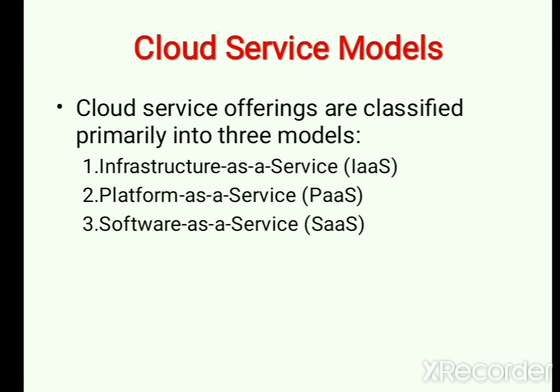The first service model is Infrastructure, the second is Platform, and the third is Software. For Infrastructure, I am requesting a particular resource, I hire that resource and do the work. For example, like Ola or cab services where you are renting the car for a particular time, you pay the money and leave the cab. The car is providing you a service to go from one place to another when you are not in a position to buy a new car.